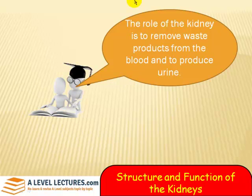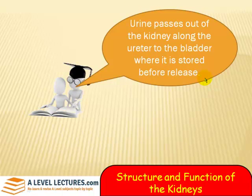The role of the kidneys is to remove waste products from the blood and to produce this substance called urine that we excrete. Urine passes out of the kidney along the ureter to the bladder where it's stored before release.